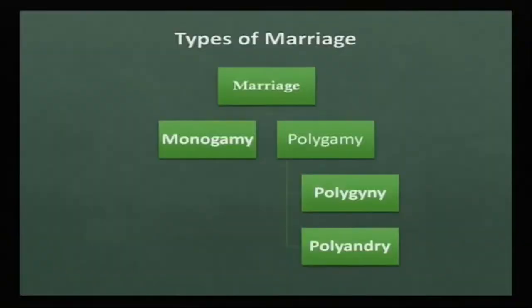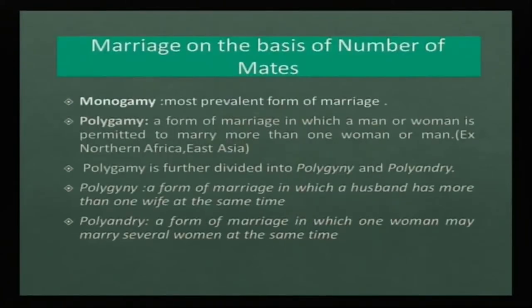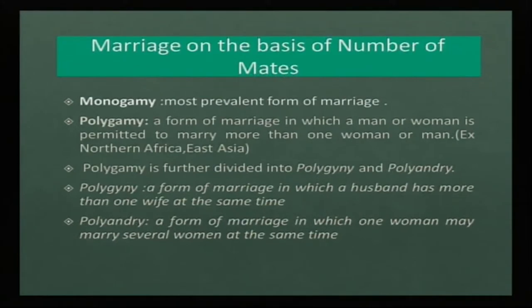There are different types of marriage: monogamy and polygamy. Polygamy is further divided into polygyny and polyandry. Monogamy is the most prevalent form of marriage, where one man is married to one woman. Whether you go to the northern, southern, eastern, or western part of India, you will find monogamy as the most prevalent form. Polygamy is a form where a man or woman is permitted to marry more than one partner, mostly found in northern Africa and east Asia.